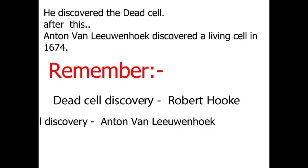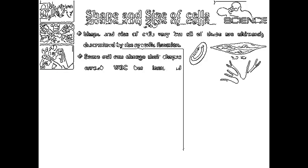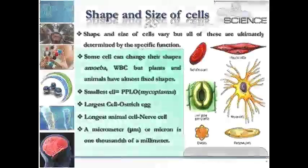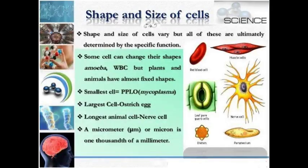Now let's talk about the shape and size of cells. The shape and size of every cell is very different. Cells are found in many shapes — both irregular and regular. Shapes can be cylindrical, spherical, or spindle-shaped, among many others. On the screen, you can see various diagrams that clearly define these different shapes.